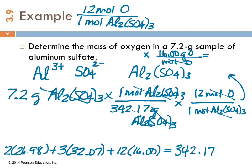7.2 divided by 342.17 times 12 times 16. 4.0 grams is the mass of oxygen in a 7.2 gram sample of aluminum sulfate.